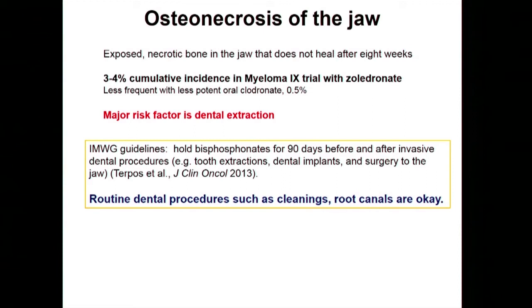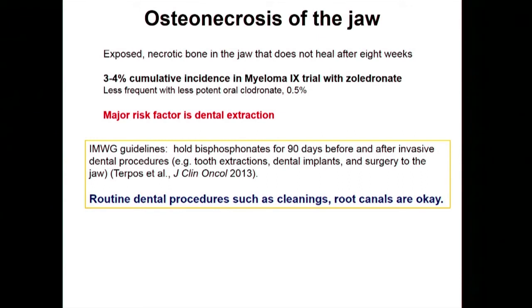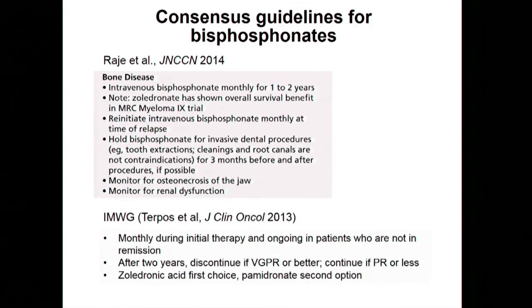A concern with bisphosphonates is osteonecrosis of the jaw. These are drugs which affect the bone and can affect bone healing, and osteonecrosis of the jaw involves exposed bone that in some patients can be uncomfortable. The major risk factor for this side effect is having a tooth extraction, but if you minimize that you really reduce the risk. Routine procedures like dental cleanings and root canals are fine. The general guidelines recommend that at time of diagnosis patients should receive bisphosphonate, and how long you stay on one is still under investigation — the standard guideline recommends one to two years, and beyond that is an area of active investigation.